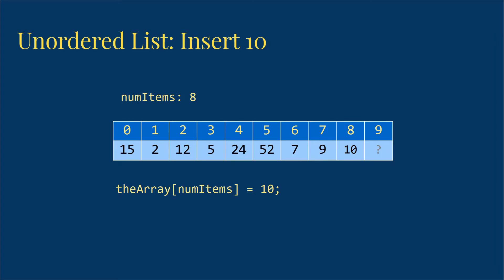So we put the 10 into the array at index num items, which is 8 here, and then we increase num items by 1. So inserting is pretty straightforward when we're talking about an unordered list.